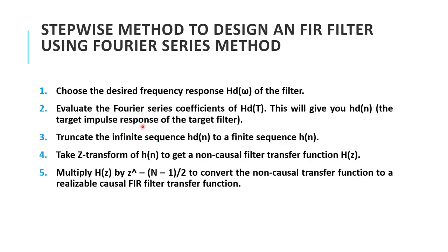The steps to design an FIR filter using the Fourier series method are: Step 1 — choose the desired frequency response hd(ω) of the filter. Step 2 — evaluate the Fourier series coefficients to get hd(n), the target impulse response. Step 3 — truncate the infinite sequence hd(n) to a finite sequence h(n). Step 4 — obtain the z-transform of h(n) to get a non-causal filter transfer function h(z). Step 5 — obtain a realizable causal FIR transfer function by multiplying h(z) by z^(−(N−1)/2).